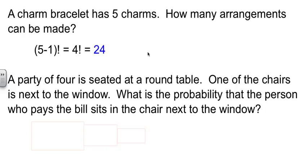Now let's consider the second case, because this is kind of interesting here. We have a party of 4 that we're going to put at a round table. So immediately, our minds start thinking circular permutations, because it's a round table. There's a trick involved here. One of the chairs is sitting next to the window. Now I want to know the probability that the person sitting in that chair is the one that pays the bill.